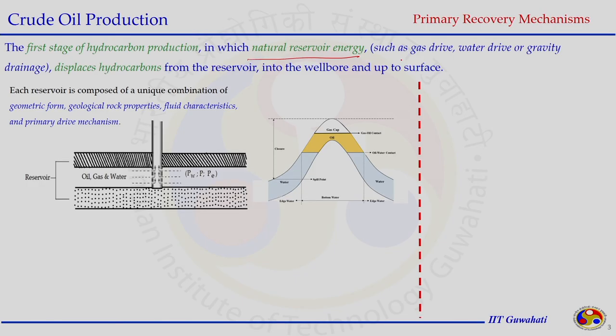Each reservoir is composed of a unique combination of geological formation, geometric formation, and fluid characteristics — what type of fluids are present — and accordingly different drive mechanisms are present. This simple diagram shows oil, gas and water in the reservoir at a very high pressure PE, the reservoir pressure. When production starts at the surface, the pressure declines and because of the pressure difference, fluid moves towards the production well.